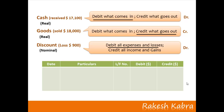Cash and discount both accounts will be debited and goods account will be credited. In the journal, we debit cash account with $17,100, then debit discount account with $900, and finally credit sales account in place of goods account with $18,000. This is the journal entry for this transaction. We have seen that only cash discount is recorded in the books — not the trade discount.